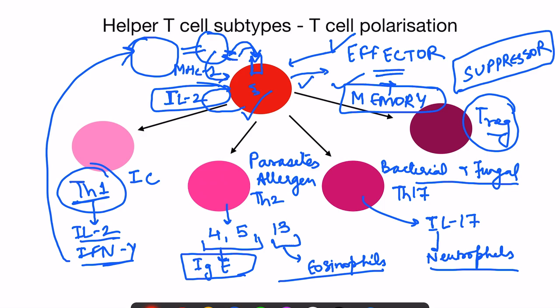In summary: the antigen-presenting cell presents antigen to naive helper T cells, which begin secreting IL-2. IL-2 causes proliferation into effector T cells and memory T cells. Depending on interleukins from the APC, helper T cells differentiate into Th1 (intracellular bacteria, viruses, cancer), Th2 (parasites, allergens), Th17 (bacterial and fungal infections), or T-regulatory cells. Interferon-gamma also activates macrophages, increasing their microbicidal activity.